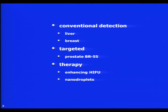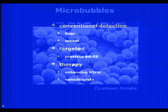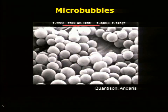But these are the topics I'll try to cover: some conventional detection, mainly for the liver. It's licensed also for the breast — a curiosity that's kind of lingered on in the product leaflet. And then we'll talk about some targeted bubbles, and there's been a lot of development there. And then on to some therapeutic applications. And finally, I'll talk about a new area which I think is very exciting indeed: the field of nanodroplets.